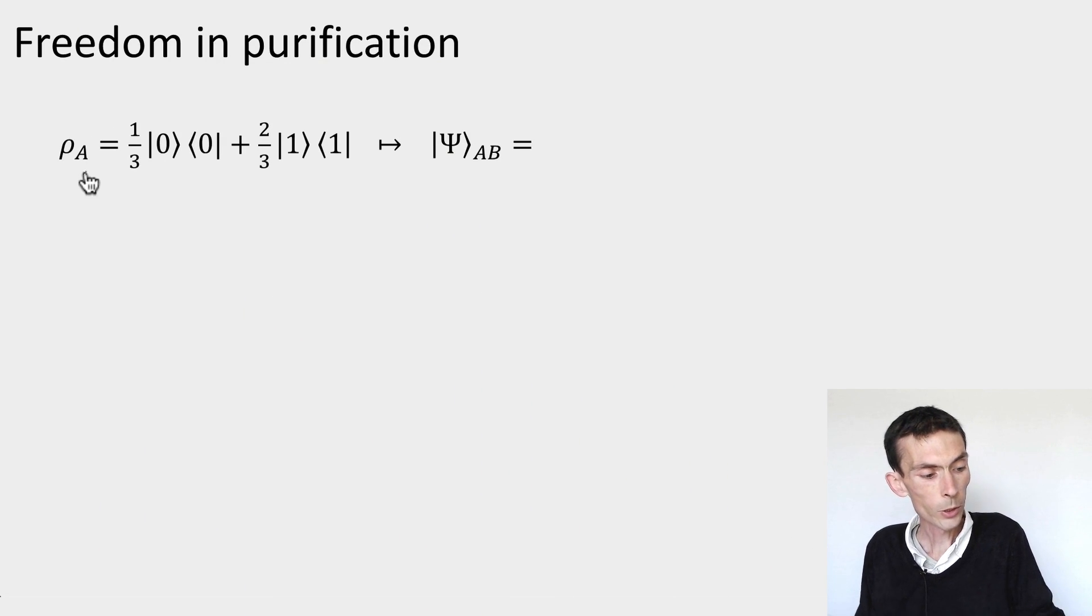So starting from the density matrix ρ_A, I can purify it in the following form. One possible purification for this matrix would be √(1/3)|0⟩ on the A system, and then I could put an arbitrary label for the B system. Let's put a |1⟩ here for B.